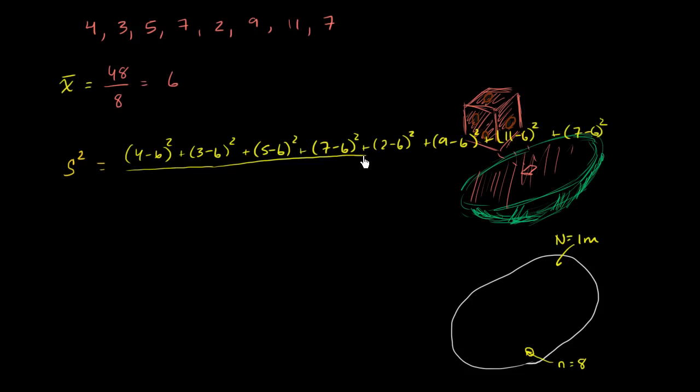All of that divided by not by 8. Remember, we want the unbiased sample variance. We're going to divide it by 8 minus 1. So we're going to divide by 7. And so this is going to be equal to, let me give myself a little bit more real estate, the unbiased sample variance, and I could even denote it by this to make it clear that we're dividing by lowercase n minus 1.